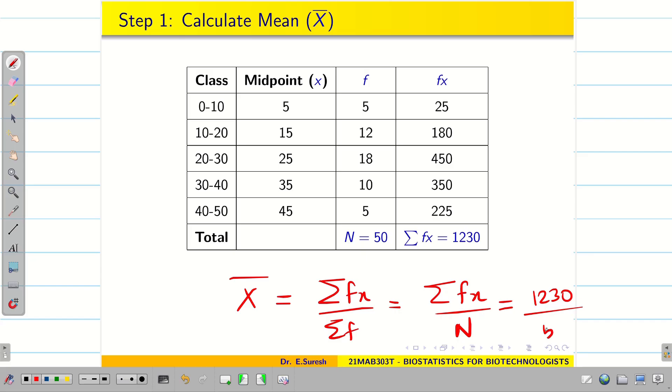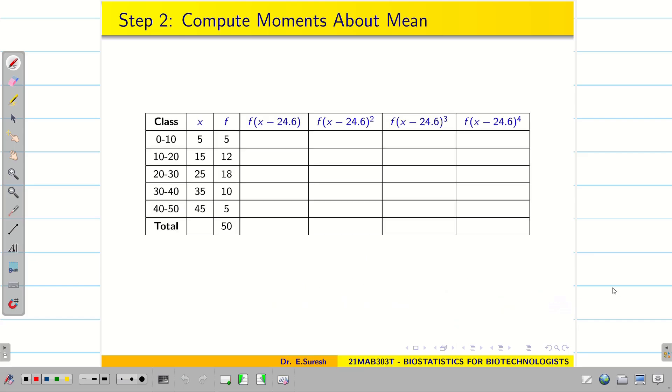My arithmetic mean is x bar that is summation fx by summation f or simply summation fx by capital N. So 1230 divided by 50 equals 24.6. Next is very important. You have to find four different columns. Before entering into the calculator, better you write the prompt. x minus 24.6, this is my mean, into f.